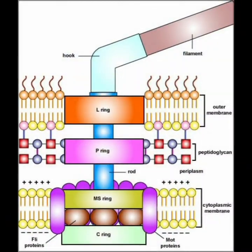The third part is the basal body. The basal body is a complex structure. It consists of two to four rings and a central rod. The filament is the outer part, the hook is the middle part, and the basal body is the inner part.